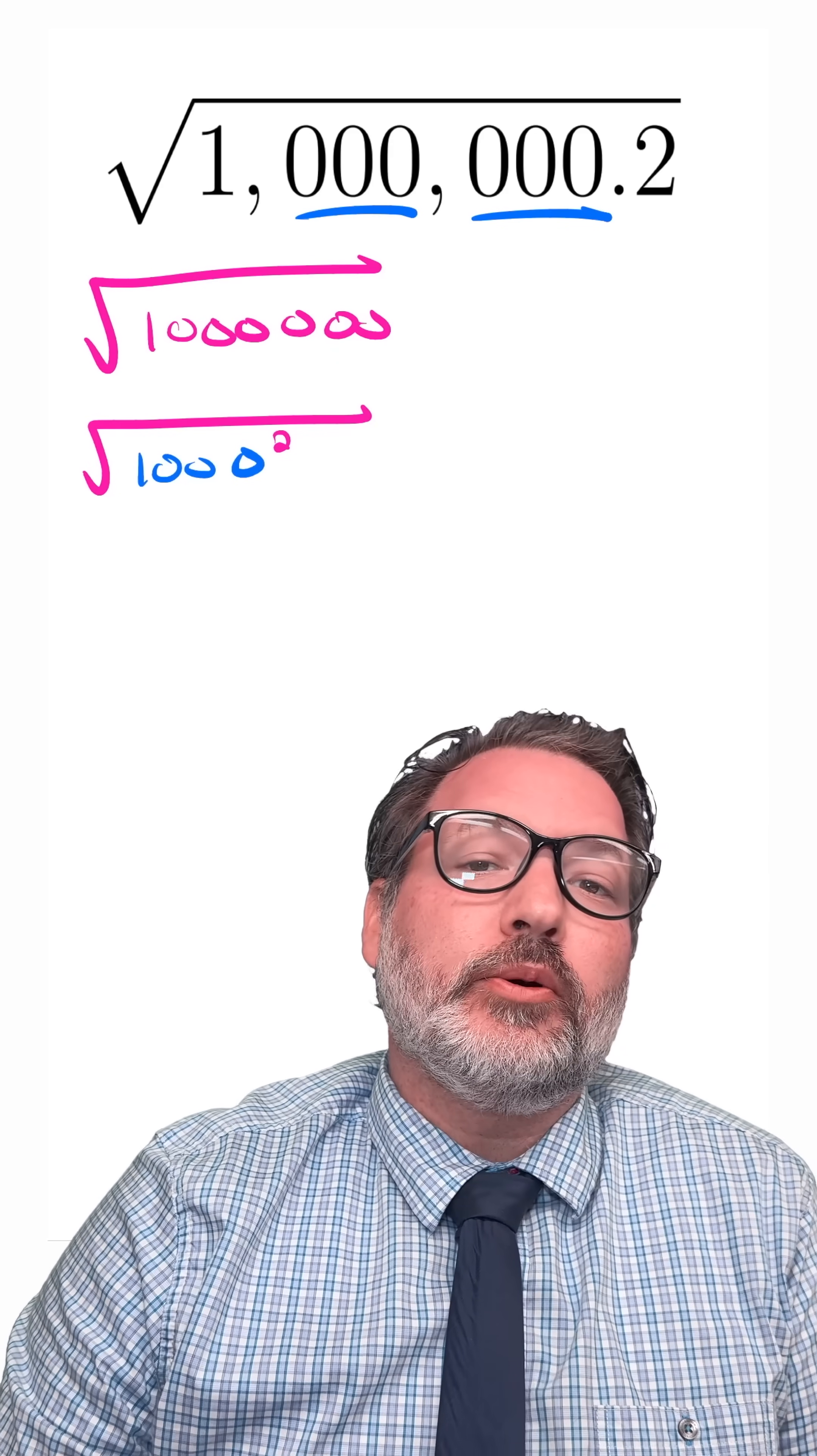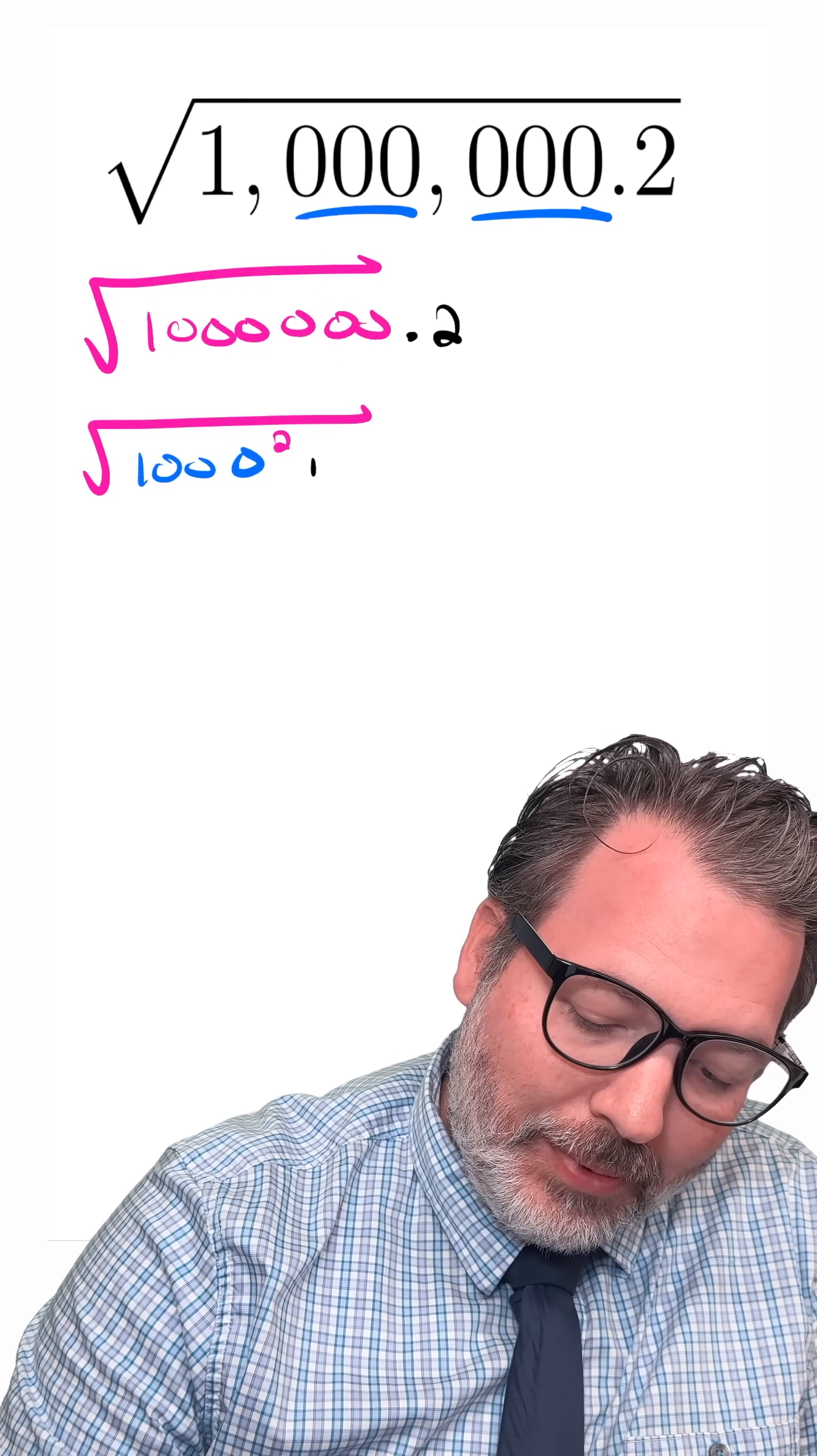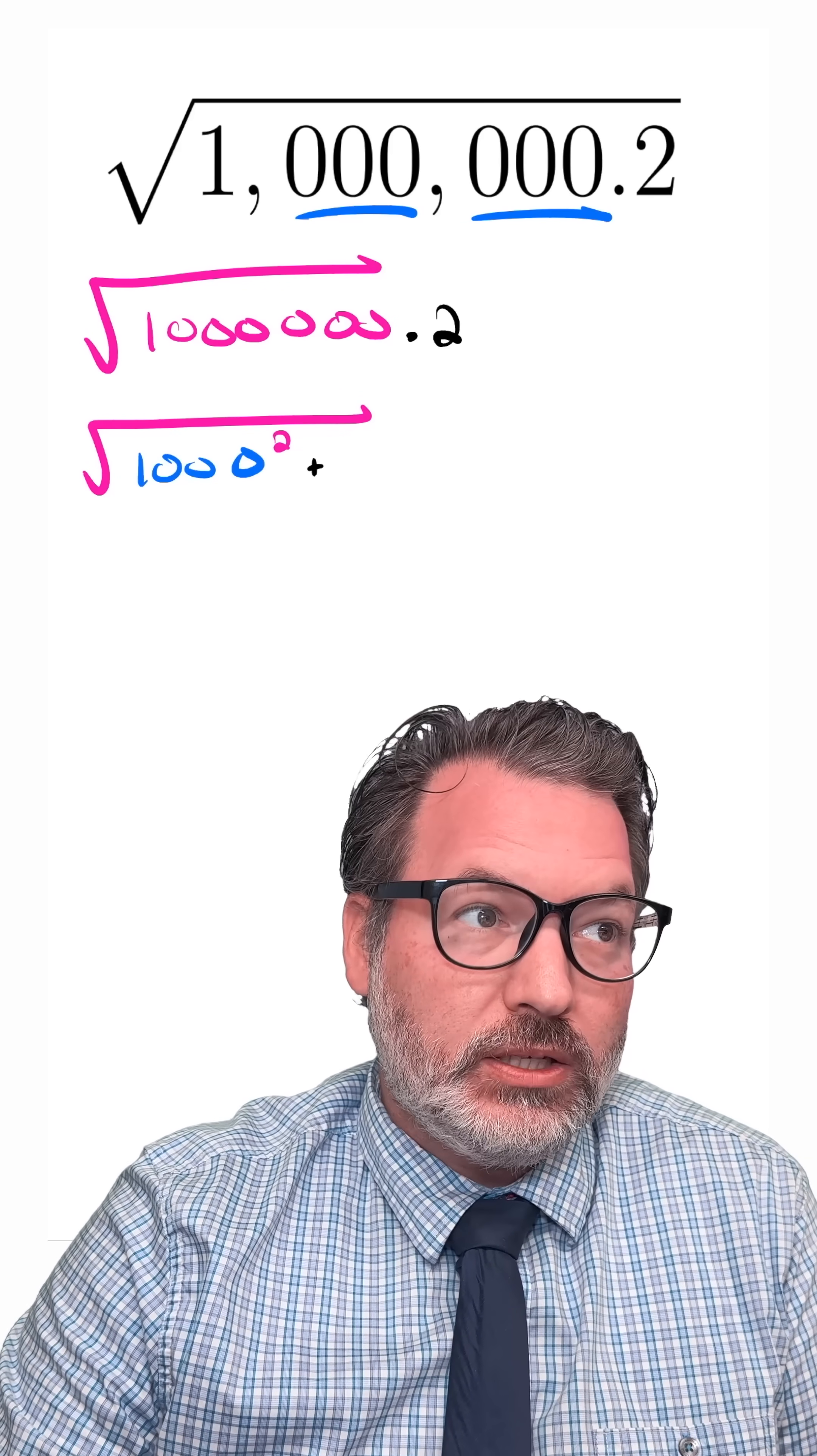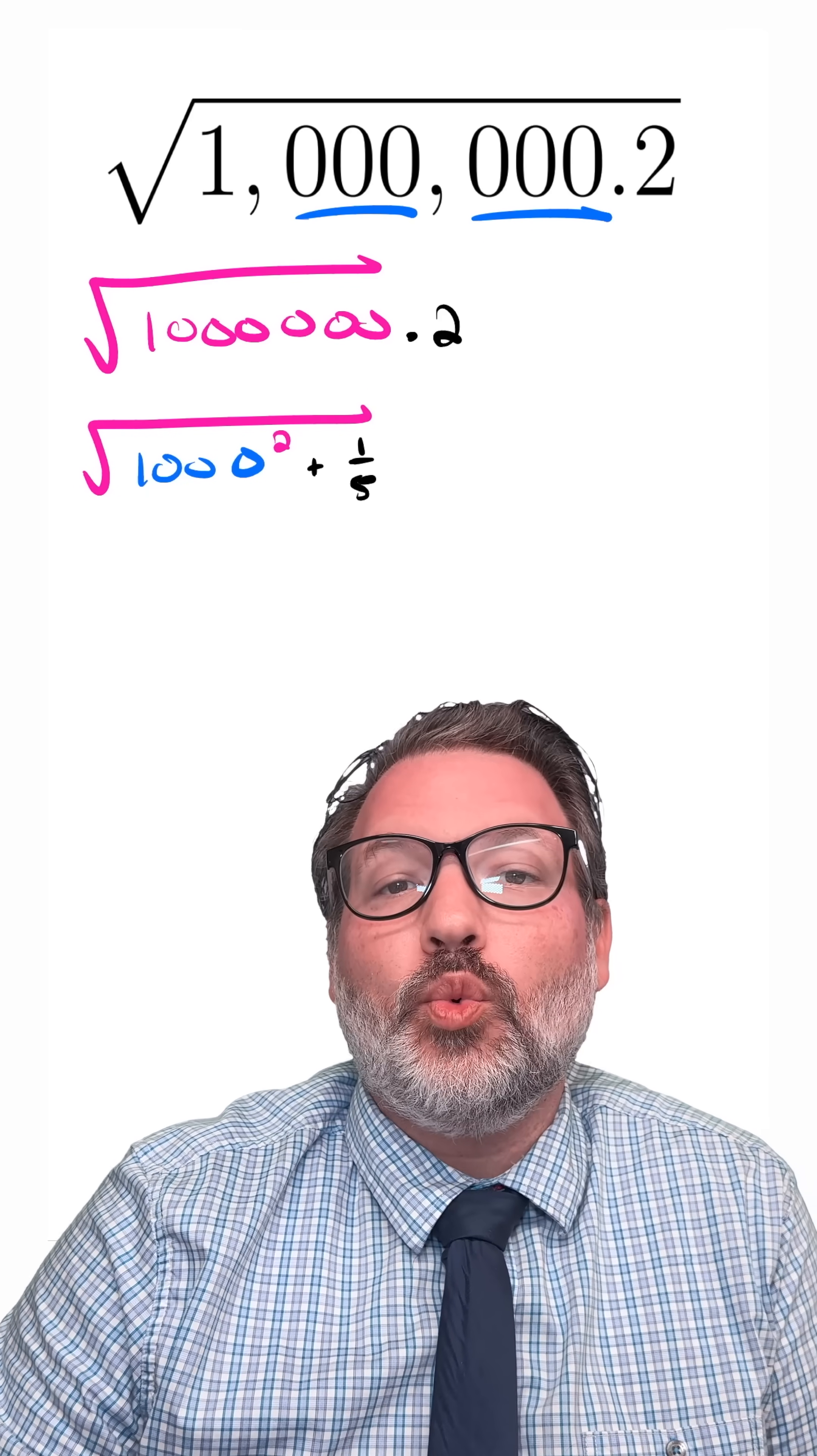Now of course, the thing I'm finding the square root of here isn't just 1,000,000, but I'm going to write that as 1,000 squared plus the equivalent of 0.2, which is 2 tenths, or I'm going to simplify that as 1/5.